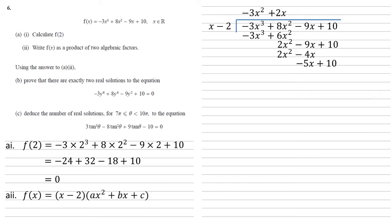Again, how many x's go into minus 5x? That's minus 5. Multiplying minus 5 by (x minus 2) gives us minus 5x plus 10, so there's nothing further to do. Therefore f(x) can be rewritten as (x minus 2) times (minus 3x squared plus 2x minus 5).